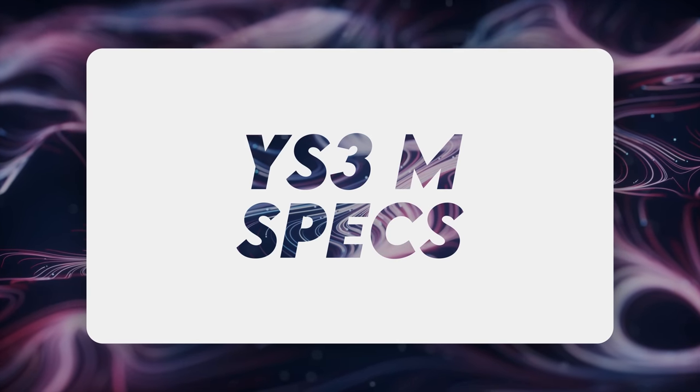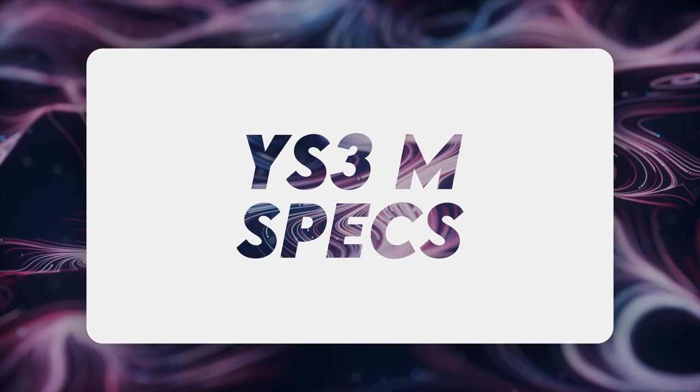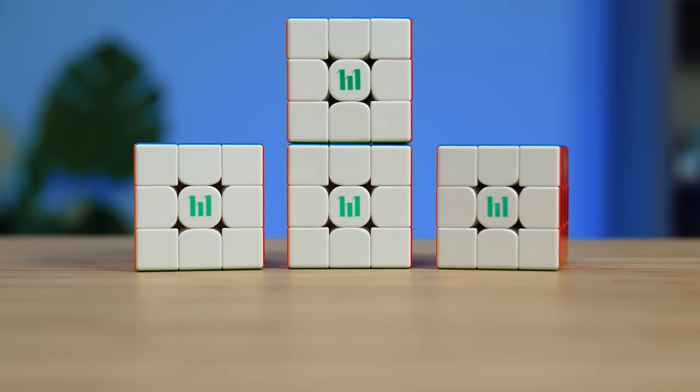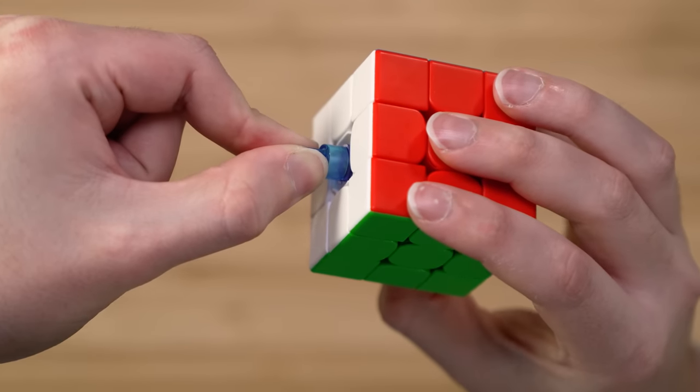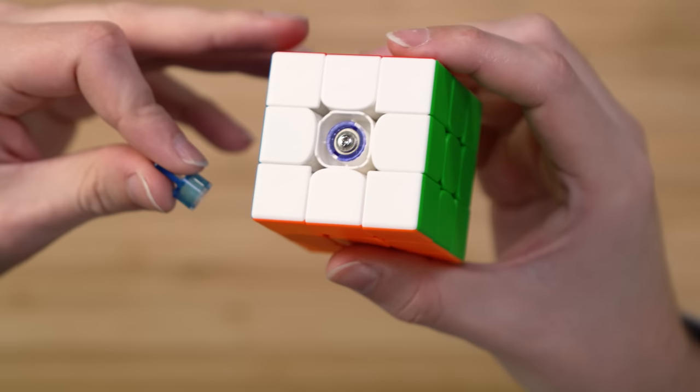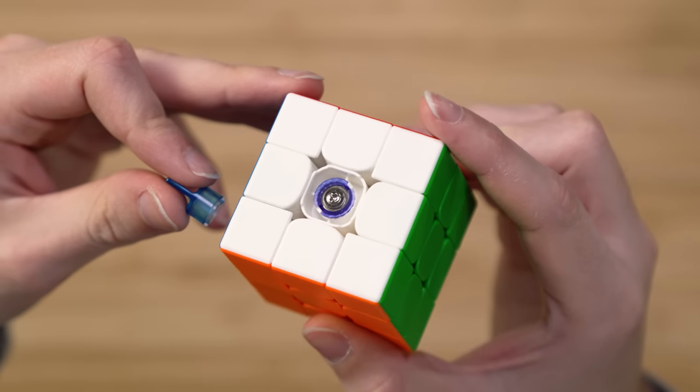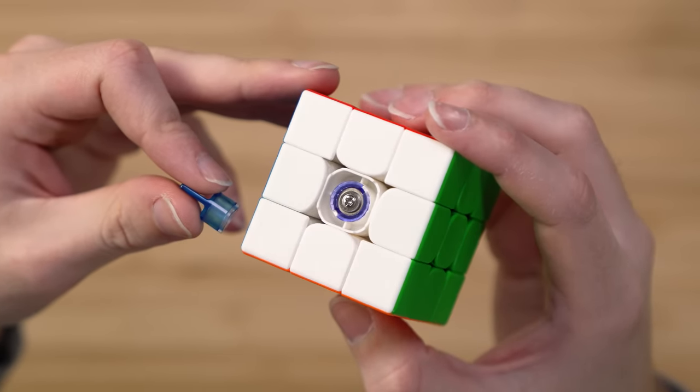We have four versions of this cube. Let's go through the similarities first. They're all 55 millimeters. They're all magnetic. You can adjust the elasticity using the MoYu tool. That's been a classic MoYu feature for a very long time. And the tensions are adjustable using the screw on each side, which is also very normal for MoYu cubes.